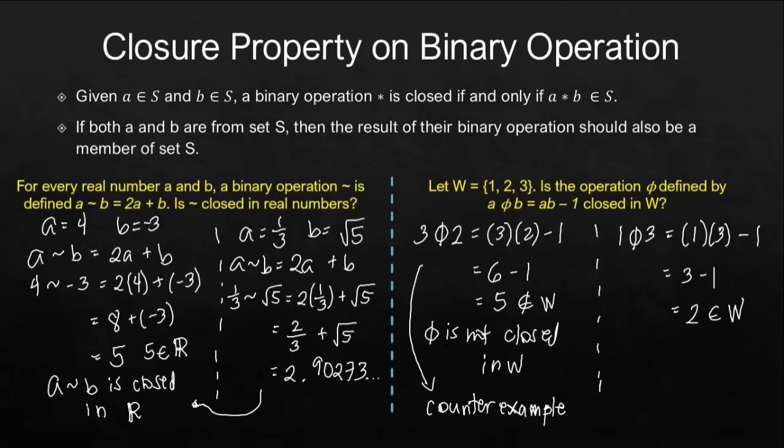So, that's it for the closure property on binary operations. Always take note that closure property requires that the input and the output should be both found on the set that is being used as reference. In this first example, we have the reference of real numbers, all the real numbers. And for the second example, just the set W.